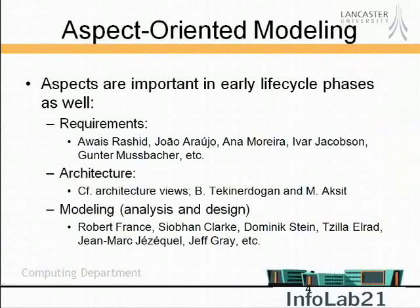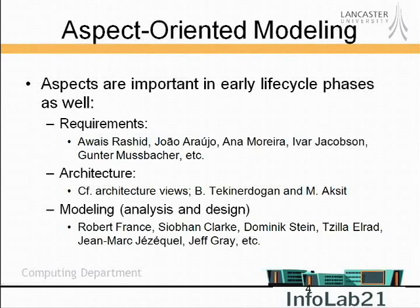Aspect-oriented programming is now quite well understood and getting to the point of maturity in industry. But this talk is about modeling, not programming. Aspects are important not only at the coding level but also at other stages of the software lifecycle. By modeling here I'll really be talking about UML models, but you can interpret that more generally to mean requirements, architecture, analysis, and design. There's been a lot of academic work over the last few years on how best to deal with aspects at the modeling level.